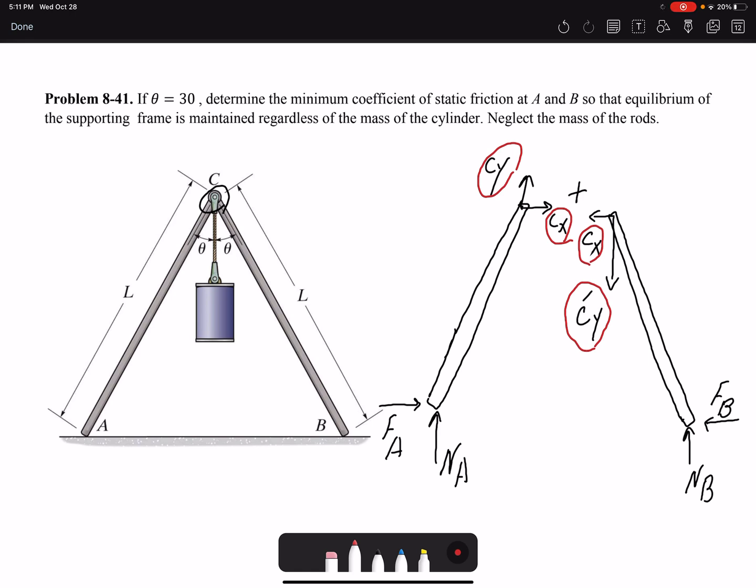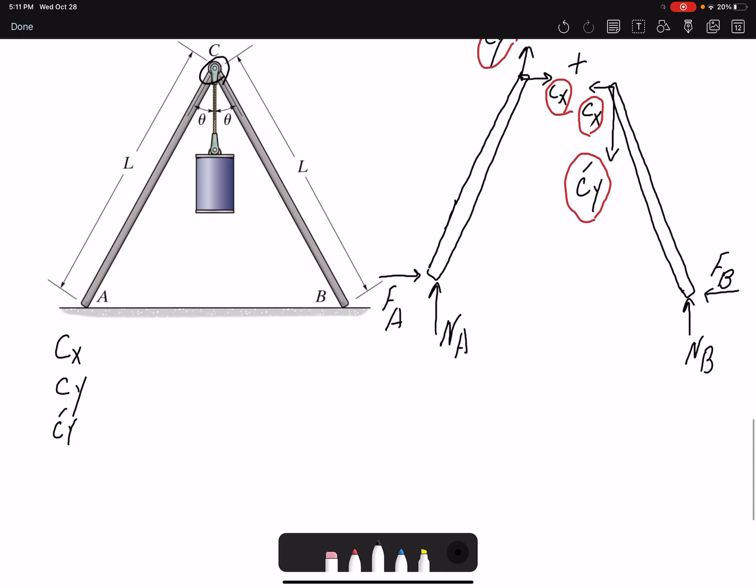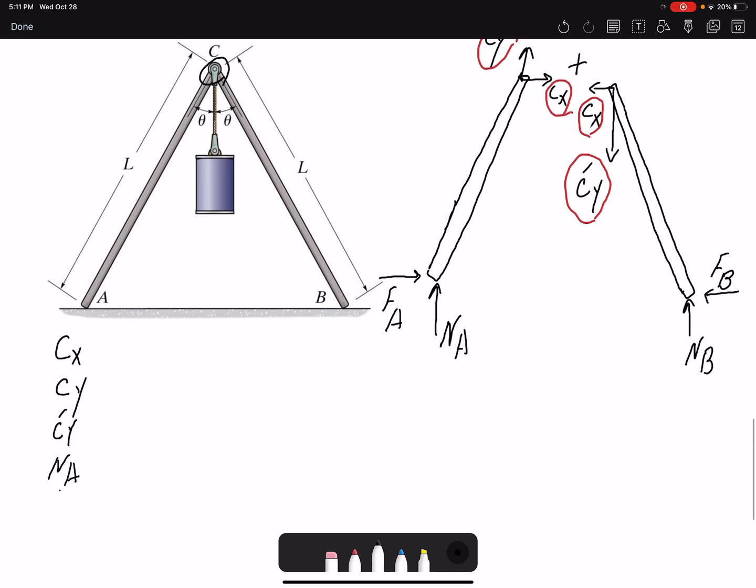We have CX as unknown, we have CY, we have C prime Y, NA, FA, NB and FB. That means we have seven unknowns.